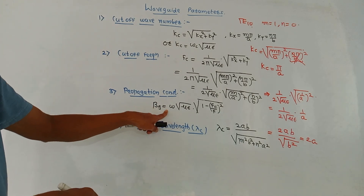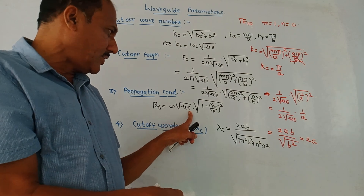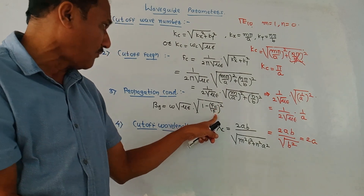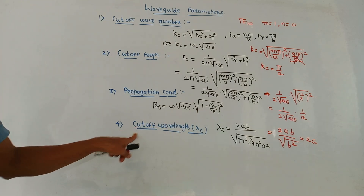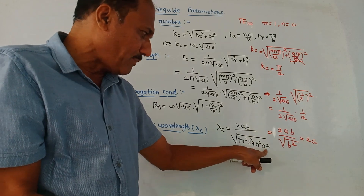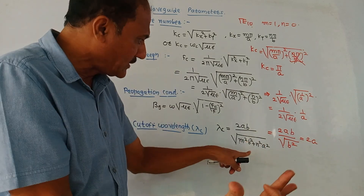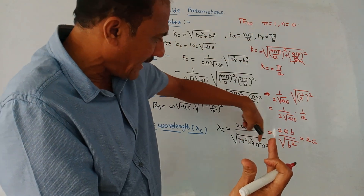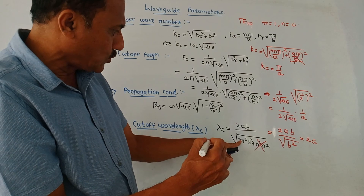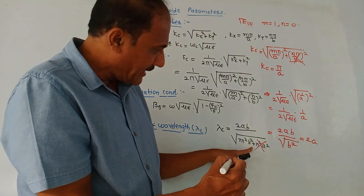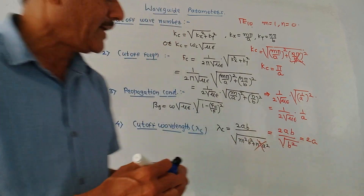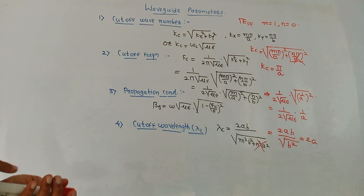Next, propagation constant: notation beta_g = omega * sqrt(mu*epsilon) * sqrt(1 - (Fc/F)²), where Fc is cut-off frequency. Next, cut-off wavelength: lambda_c = 2AB / sqrt(M²B² + N²A²). For the dominant mode, put M = 1 and N = 0, so the N term vanishes. Putting M = 1, the result simplifies — the terms cancel — giving lambda_c = 2A. These are the formulae related to waveguide parameters.